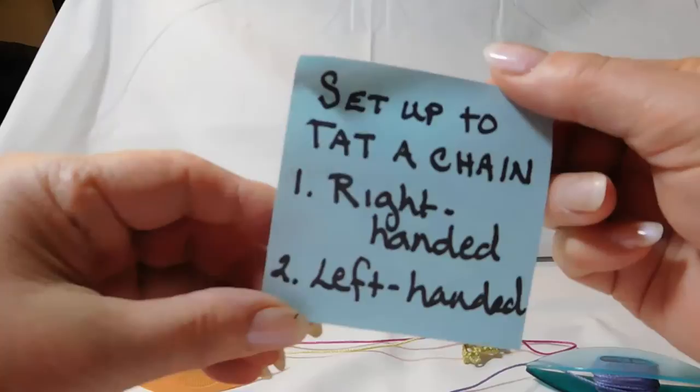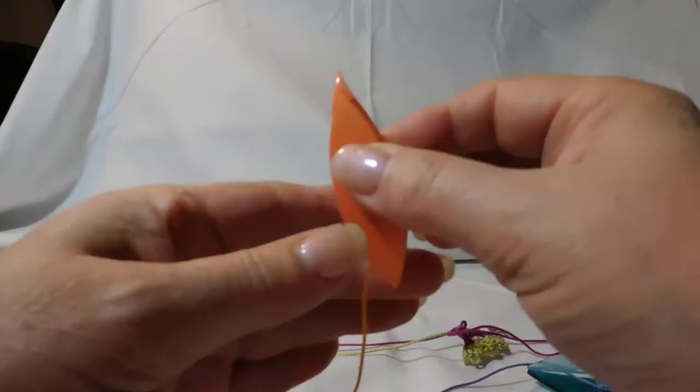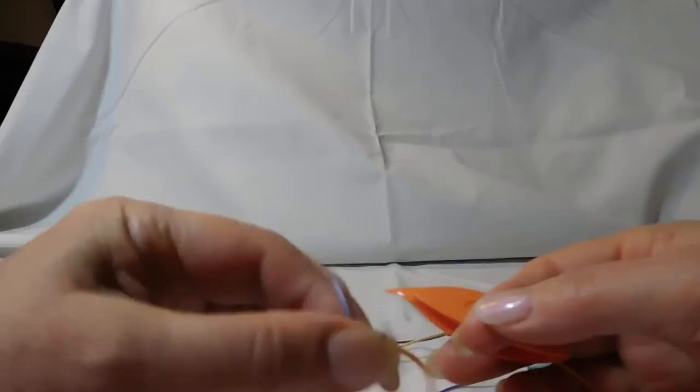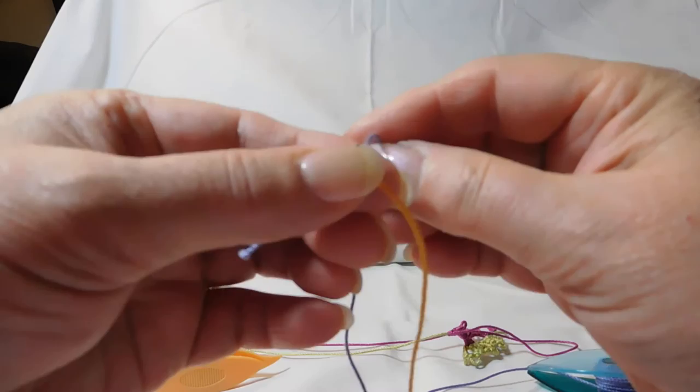We're going to start with setting up to tat a chain. First I'll do right-handed, then I'll do left-handed. Here's my right-handed wind. I have my two different colors so you can see what I'm doing. You can see that I've tatted a little bit of chain first. I'm grabbing the place where I want to start the tatting right between my thumb and forefinger.